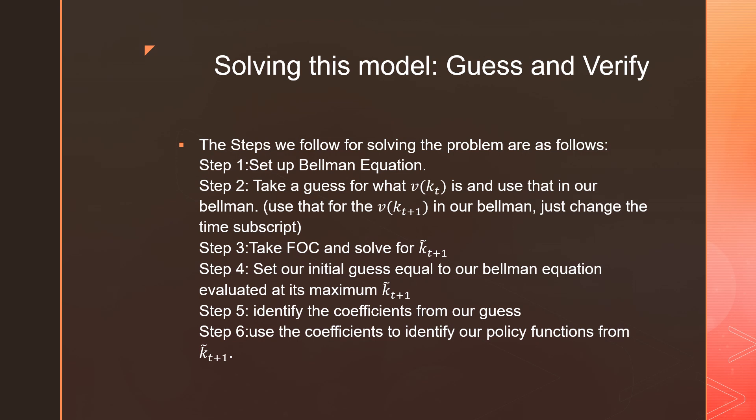Take the first order condition to solve for k_{t+1}, and we're going to put a little tilde over it to show it's an intermediate one. Step number four is we're going to set our initial guess equal to our Bellman equation evaluated at its maximum. Step number five is that we're going to identify our coefficients from our guess from step number four. And step number six is that we're going to use the coefficients to identify our policy functions from k_{t+1} tilde.